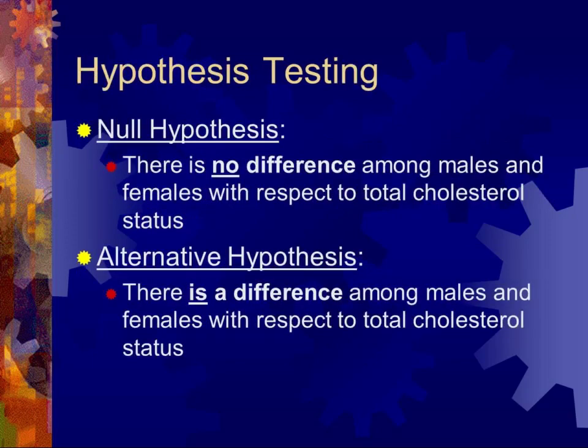We do what's called hypothesis testing to look for differences. By convention, the null hypothesis in statistics suggests there is no difference among the variables being studied — in this case, males and females with respect to total cholesterol status. We also set up an alternative hypothesis, which is that there is in fact a difference among males and females with respect to total cholesterol.